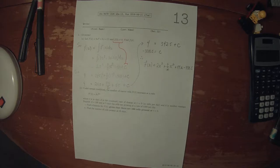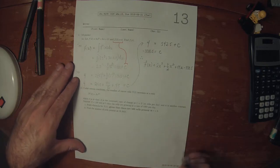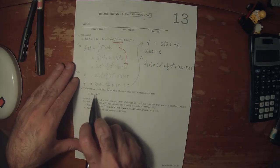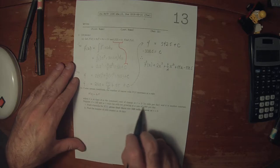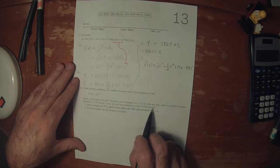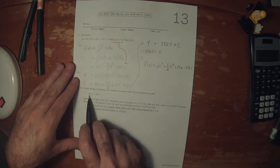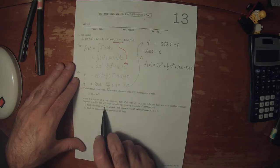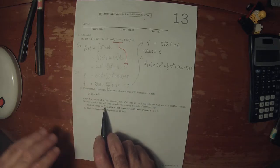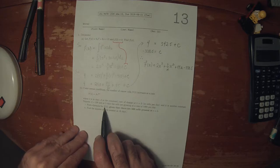The next exercise is also an initial value problem. We're given the derivative of n, and we're given some specific information about n. Given the derivative and this specific information, we're supposed to find the original function n.